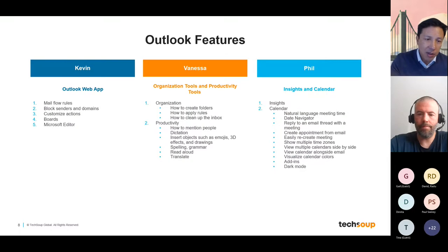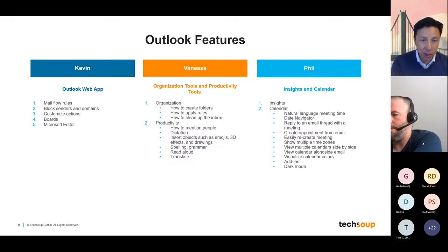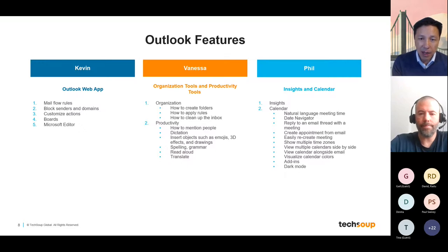Here are some of the things we're going to cover today. Kevin is going to kick us off with mail flow rules and some configuration in the web client, because that's his preference. Then Vanessa and I will go through the desktop version. Vanessa will take you through organization and productivity features, and I will cover Insights — the AI portion of Outlook — and then some best practices in the Outlook calendar.